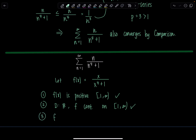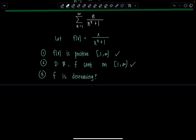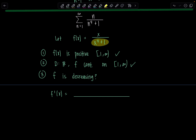The last thing to check is: is f decreasing? That's not always obvious. So we're going to take the derivative to determine whether f is decreasing. Using the quotient rule — I'll use my little rhyme: low d-high minus high d-low, over low-low — we get: x to the fourth plus 1 times the derivative of the numerator, minus the numerator times the derivative of the denominator, over x to the fourth plus 1 squared.